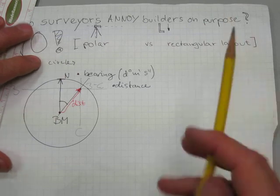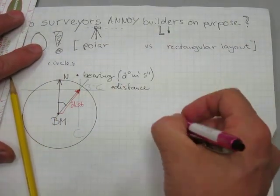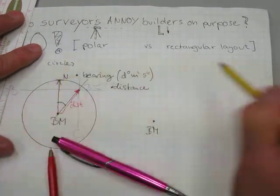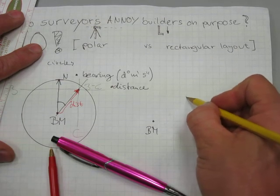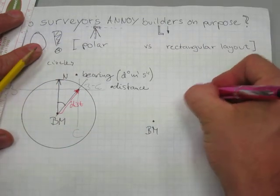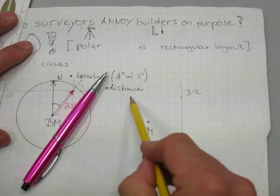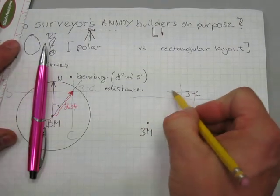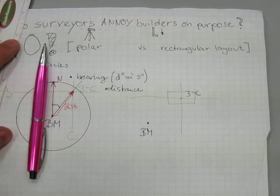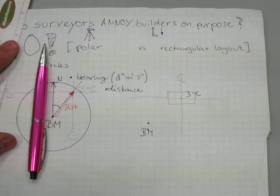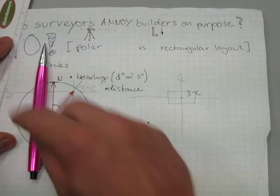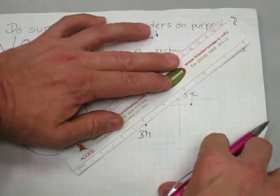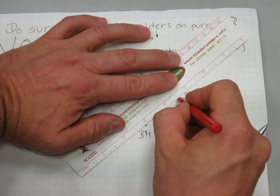Builders work in a rectangular layout. From the same benchmark, they want to lay out point 3C — they want to build a column around point 3C. That's how the column is referenced and the centerline is marked. Builders would love to have surveyors give them a corner, but that usually doesn't work, because surveyors work with their original bearing and distance.